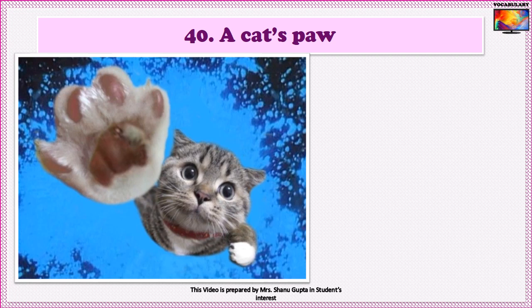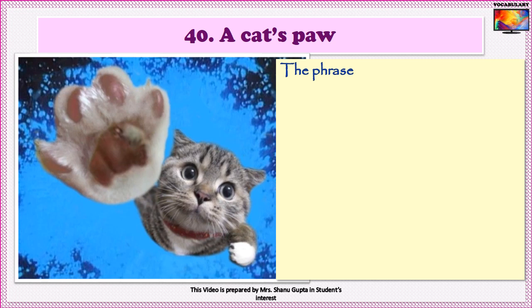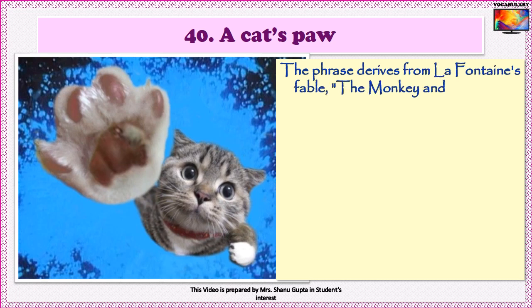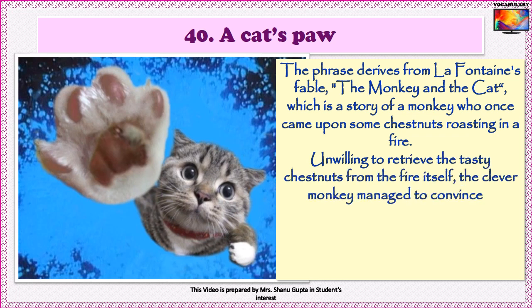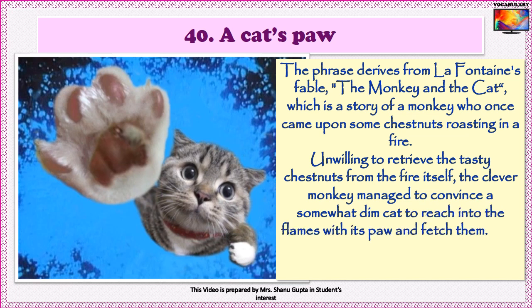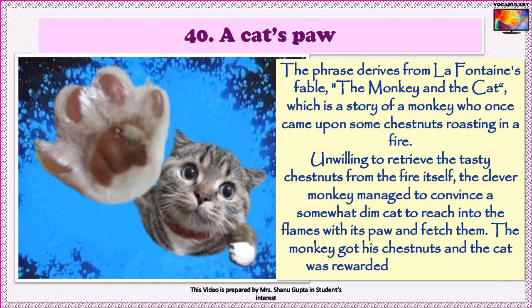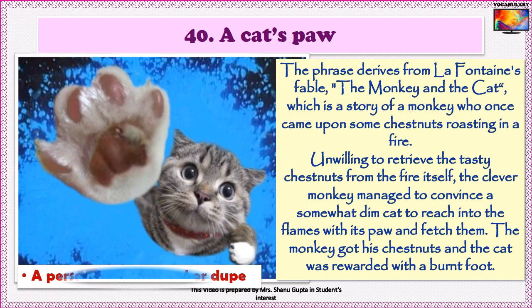And the last idiom in this section is A cat's paw. It is a phrase derived from La Fontaine's fable The Monkey and the Cat — the story of a monkey who came upon some chestnuts roasting in a fire. Unwilling to retrieve the tasty chestnuts from the fire itself, the clever monkey managed to convince a somewhat dim cat to reach into the flames with his paw and fetch them. The monkey got his chestnuts and the cat was rewarded with a burnt foot. So the phrase refers to a person used by another as a dupe or tool.